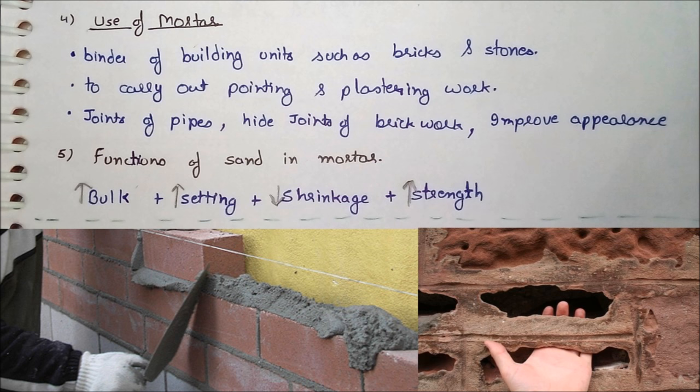Now, coming to the uses of mortar. We use mortar as a binding and adhesive material to join bricks and stones. It is also used for pointing work and plastering work, for joining of pipes, and for any type of surface appearance. Mortar is also used for maintenance work and filling up of joints. Since mortar is a composition of sand and cement, sand gives bulking to the mortar, increases the setting time, prevents shrinkage, and gives strength to the mortar.